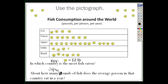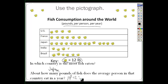How many pounds of fish does the average person in Japan eat per year? Let's count the fish symbols: 1, 2, 3, 4, 5, 6, 7, 8, 9, 10, 11, 12, 13, 14 — there are 14 fish. However, each picture of a fish represents 12 pounds, so 14 times 12 equals 168 pounds per person per year. That is a lot of fish. Each fish symbol equals 12 pounds, so 14 times 12 gives us 168.